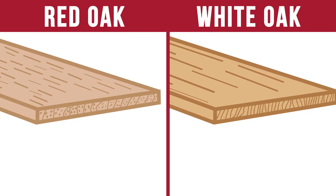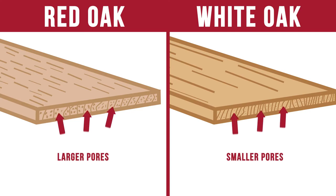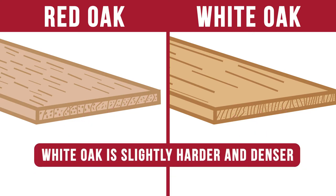Another way you can tell the difference between these two species is by observing the growth rings on the sides of the flooring. Red Oak growth rings are generally more spaced out than white oak. Also, the pores in between the layers of each ring are a little larger and more numerous in the red oak than the white oak. This is important to note because it demonstrates that white oak is a slightly harder and more dense wood species than red oak.